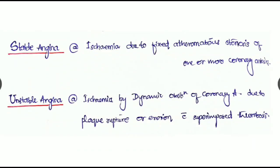There are two types of angina: stable angina and unstable angina. Stable angina is ischemia due to fixed atheromatous stenosis of one or more coronary arteries. Unstable angina is due to ischemia by any dynamic obstruction of a coronary artery due to plaque rupture or erosion with superimposed thrombosis.